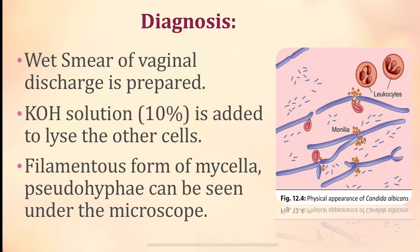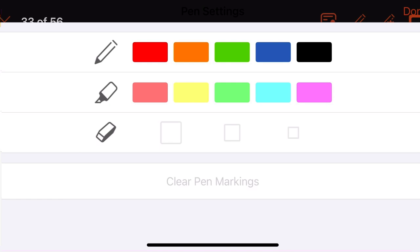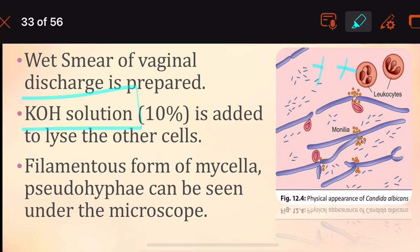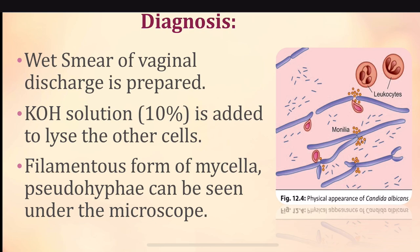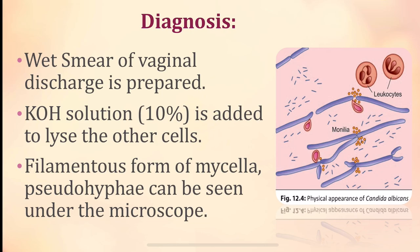For diagnosis, a wet smear of vaginal discharge is prepared. A 10% KOH solution is added to lyse other cells so you can focus on the causative organism. Filamentous forms of mycelia and pseudo-hyphae can then be seen under the microscope — these two findings are characteristic of Candida.